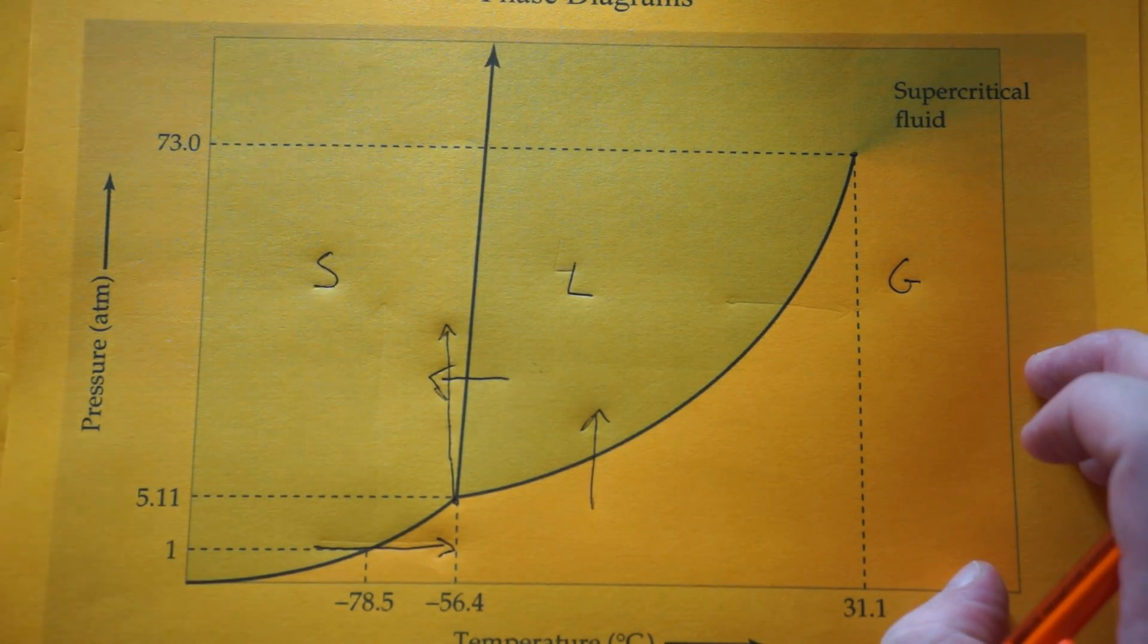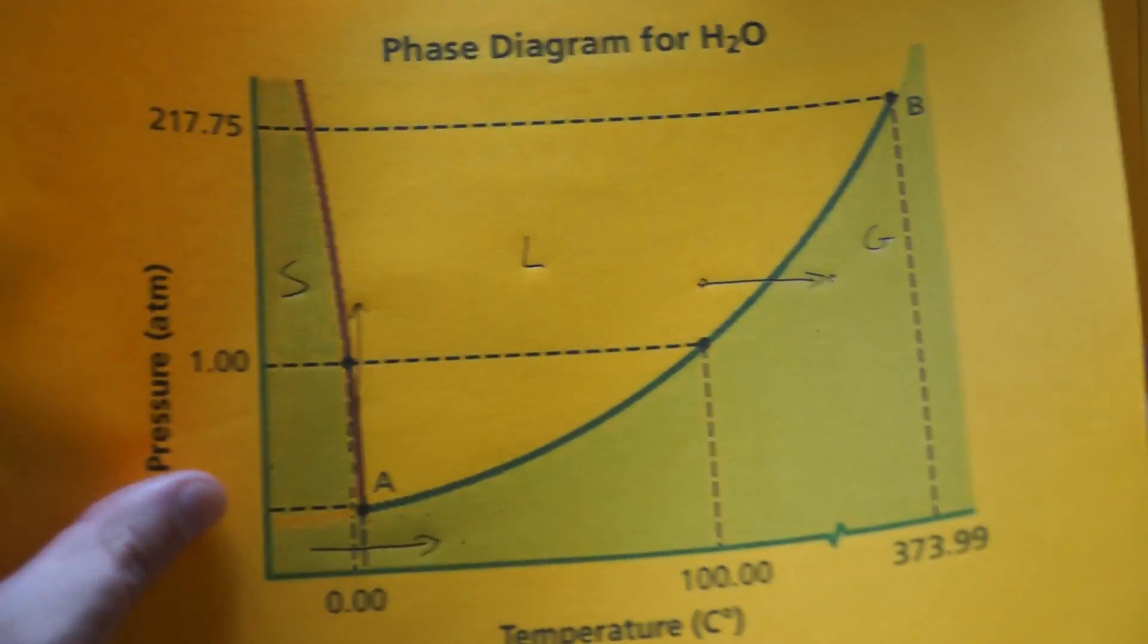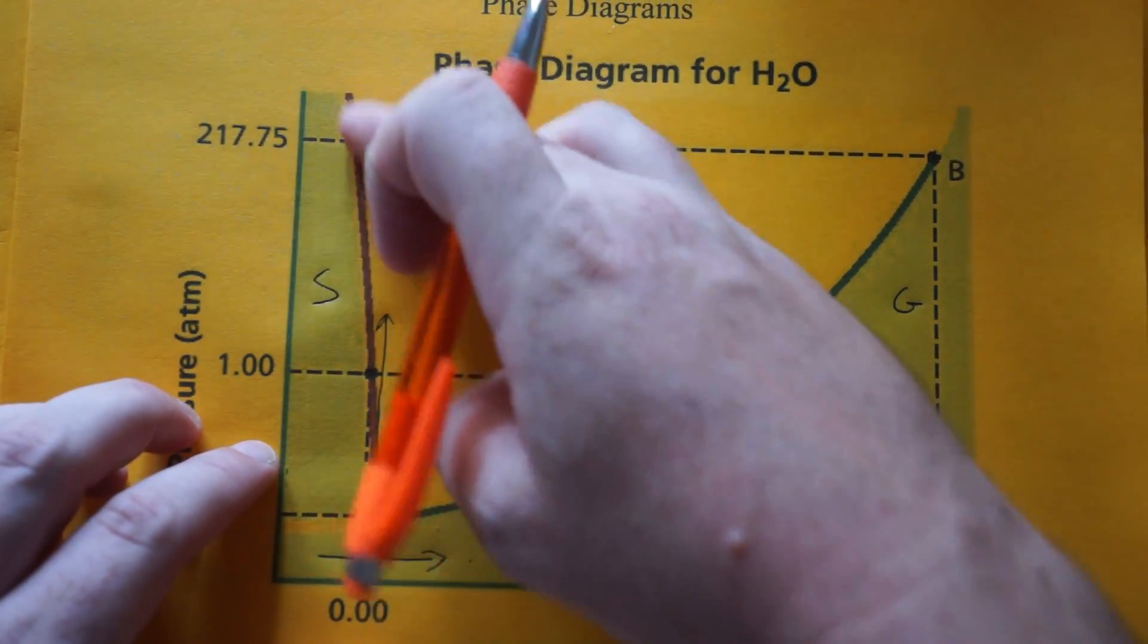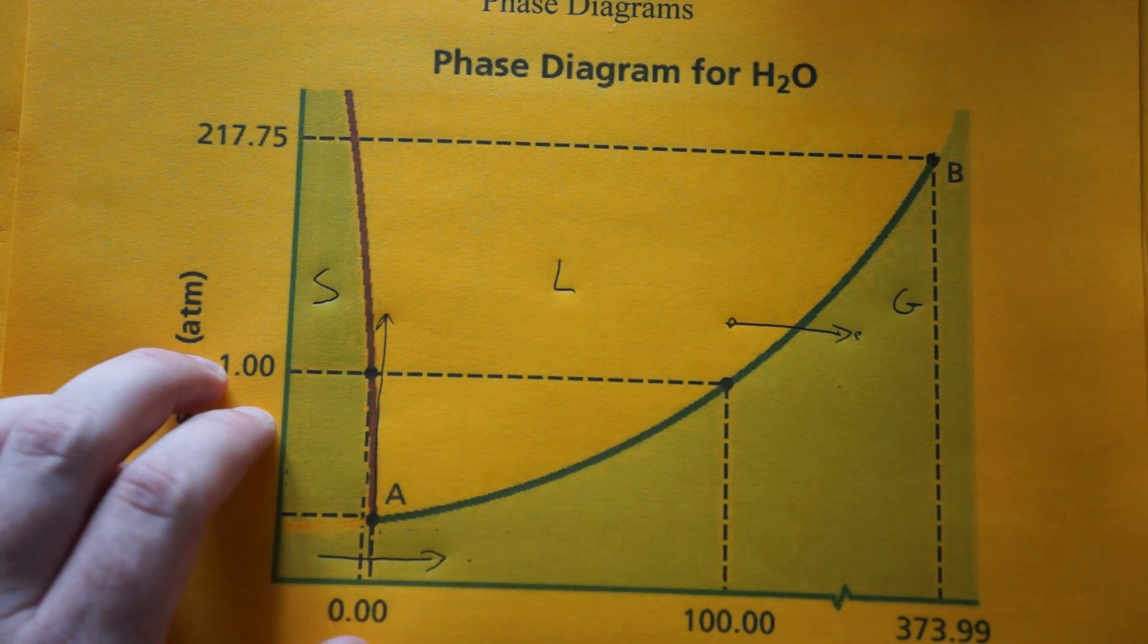All you have to know is that if it tilts to the right, the solid is the most dense phase. If we go back to water, if it angles to the left, the liquid is the most dense phase. And that's phase diagrams. Hope that helps.